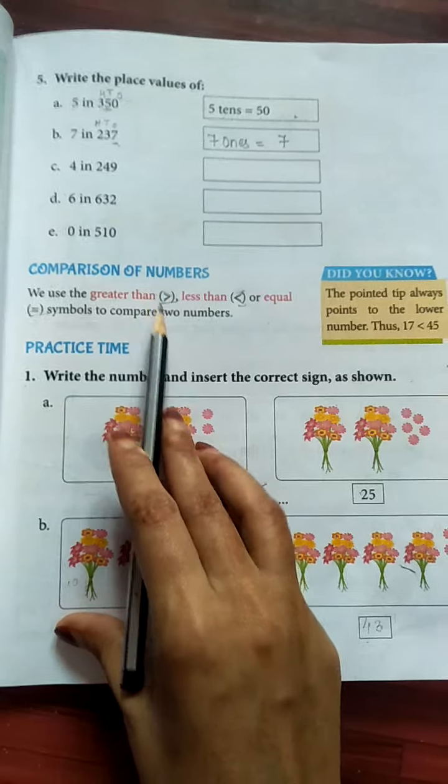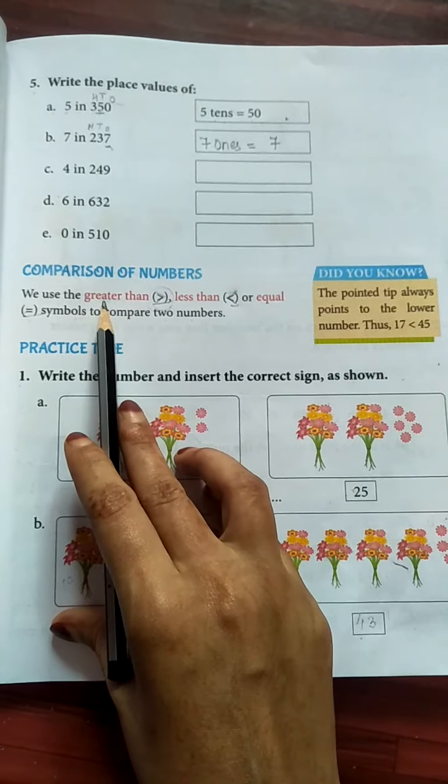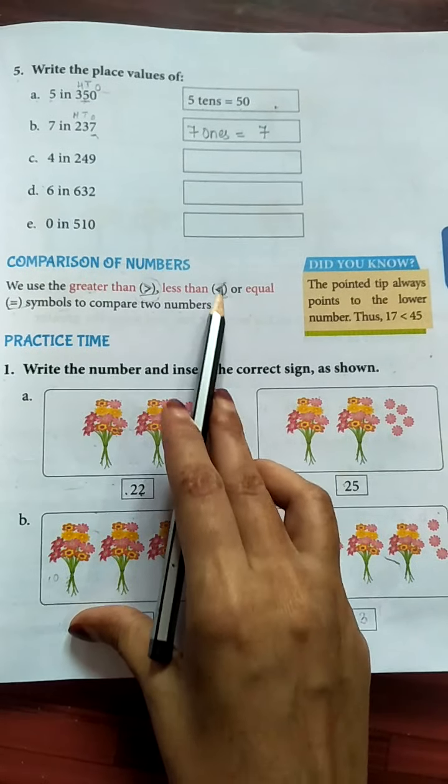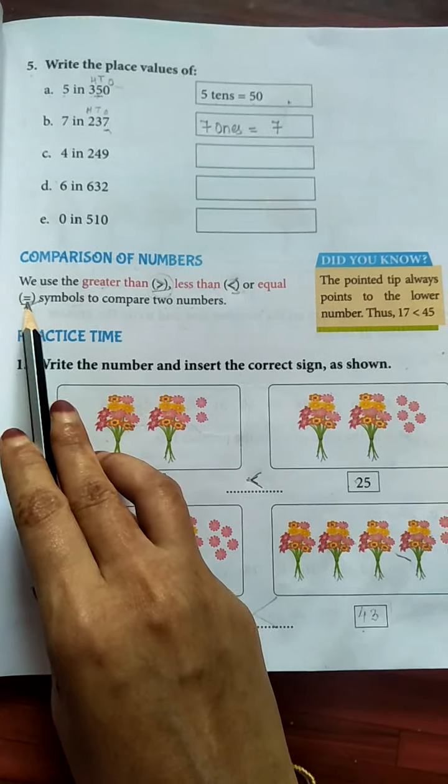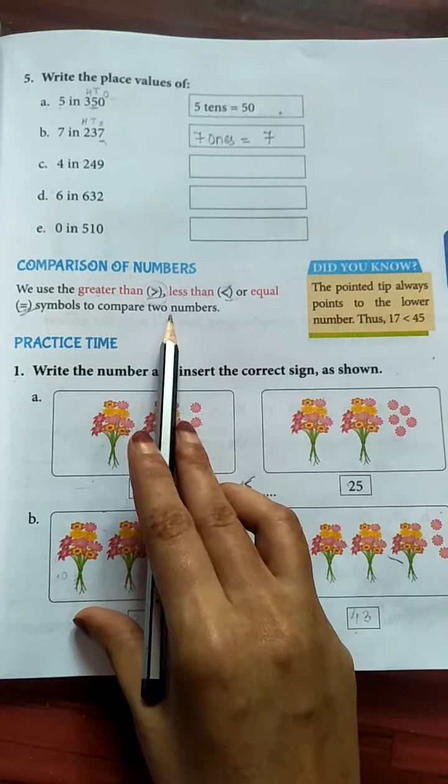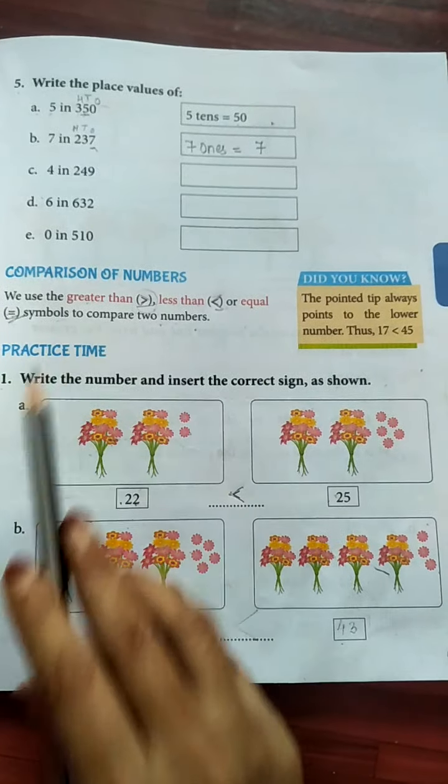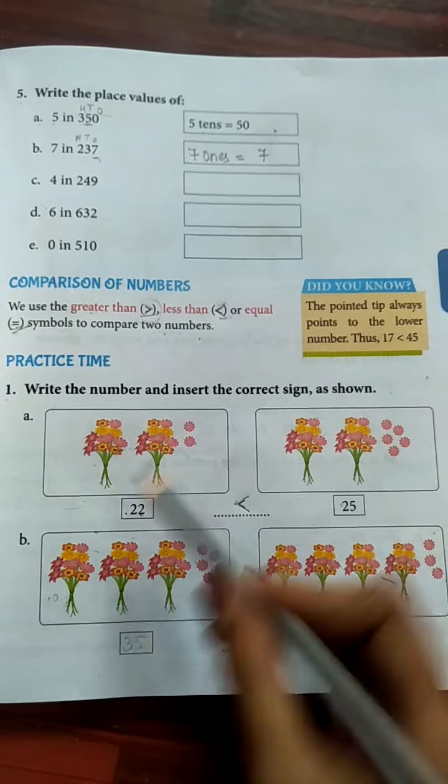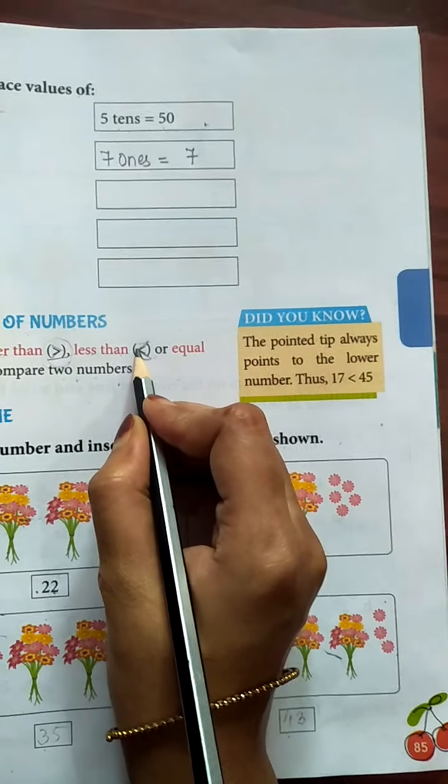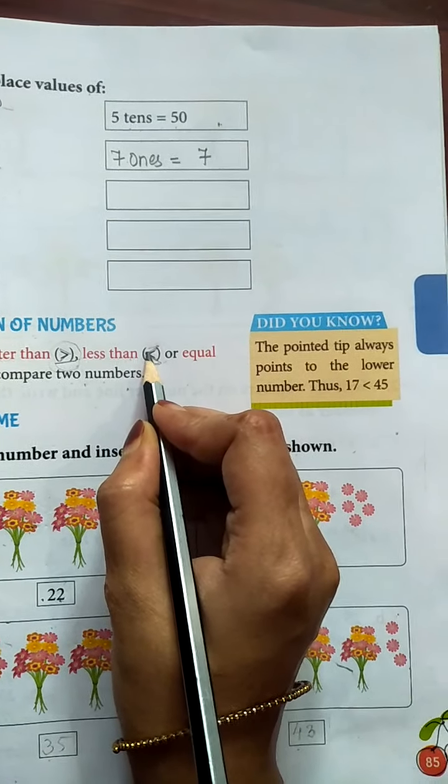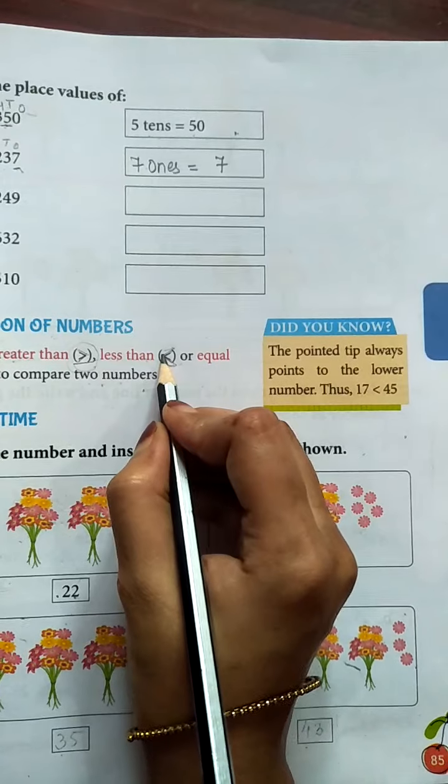Now see here, this is the symbol of greater than and this is the symbol of less than, or this is the equal sign. Symbols to compare two numbers. Now you always remember the pointed tip always points to the lower number.